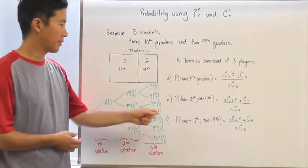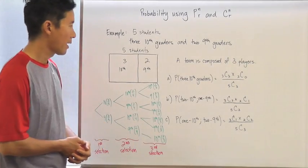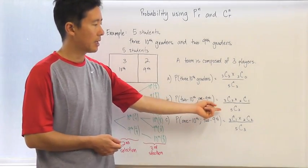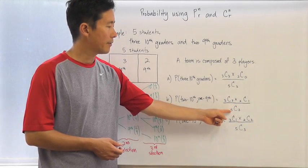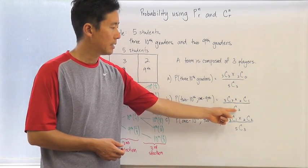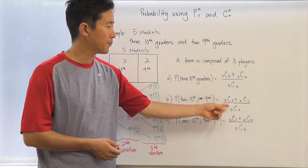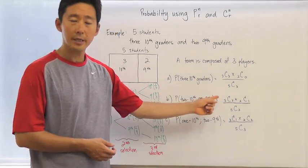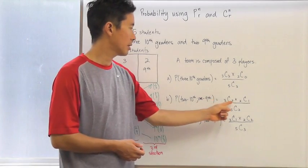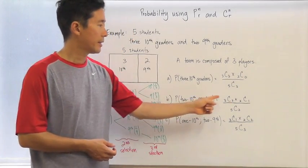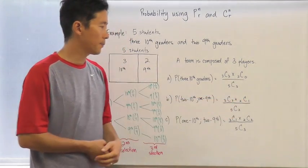Let's look at one more case: two tenth graders and one ninth grader. Using the combinatoric method, the denominator is still C(5,3) — five students choosing three — as the total number of possibilities for the team. Then out of the three tenth graders I choose two, and out of the two ninth graders I choose one.